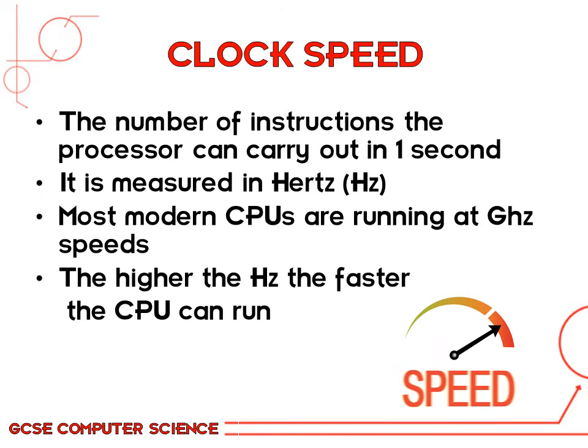Clock speed is the number of instructions the processor can complete in one second. It is measured in Hz, and usually in GHz in modern times. The higher the number of Hz, the faster the CPU can run. CPUs can get very hot and need a cooling system to ensure they do not overheat. An example of a clock speed could be 3.2 GHz.